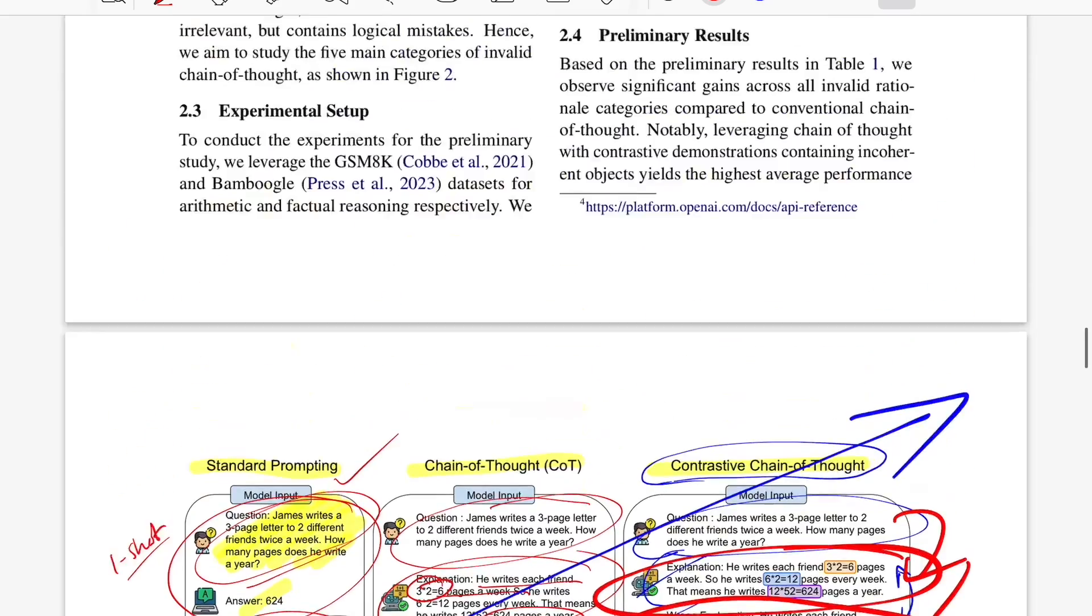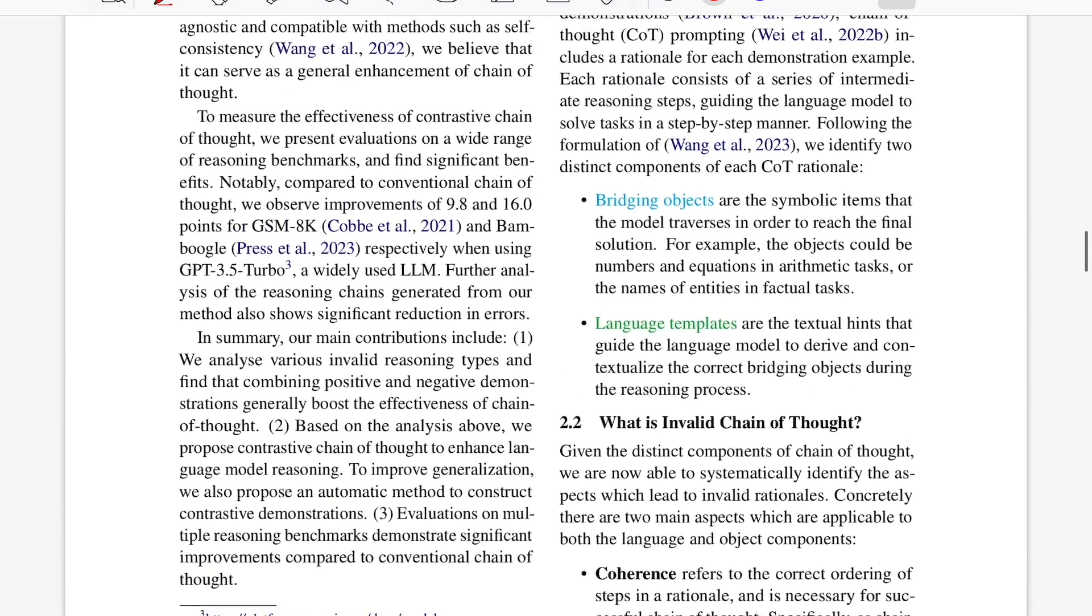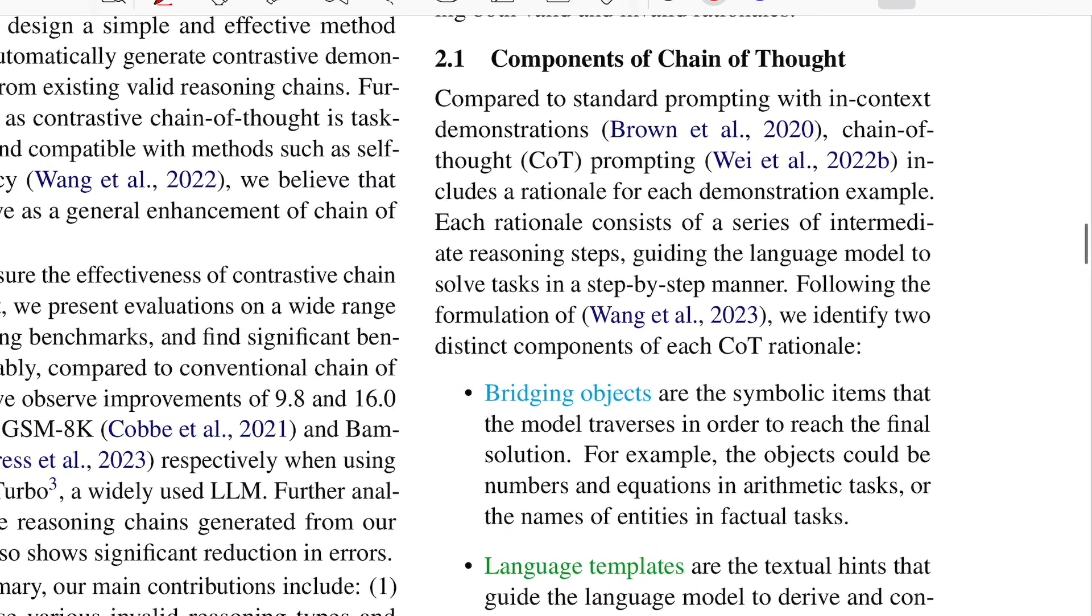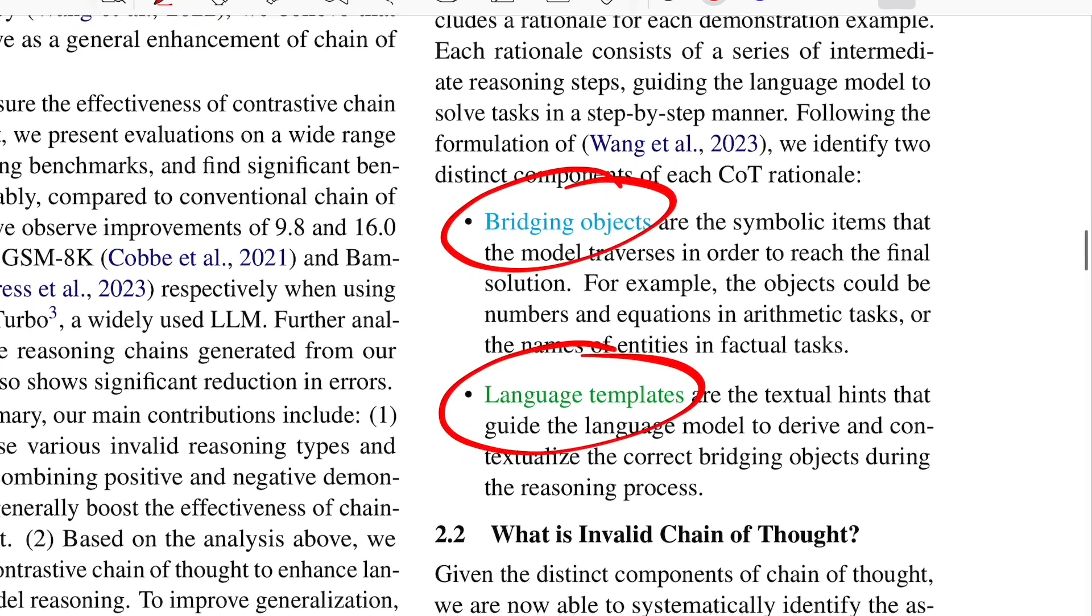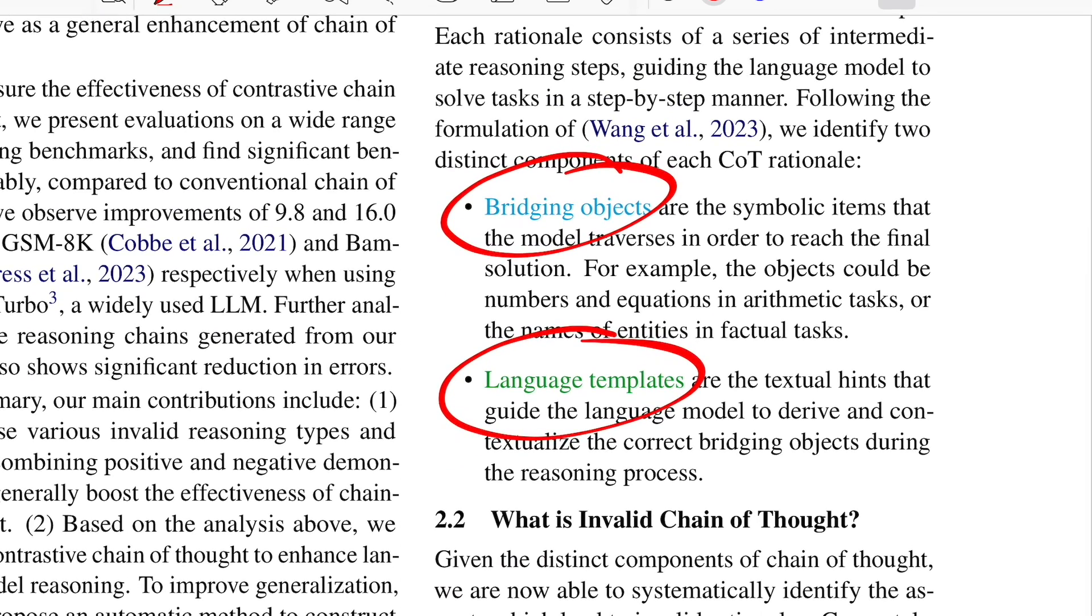For that, they have defined components of chain of thought. A usual chain of thought has these two components: one is bridging objects, second is language template. Bridging objects are items, arithmetic equations, tasks - all of that which the model traverses from start to end to get to the final answer.